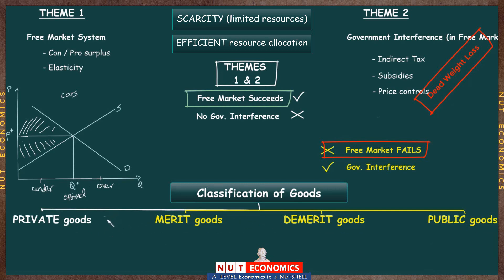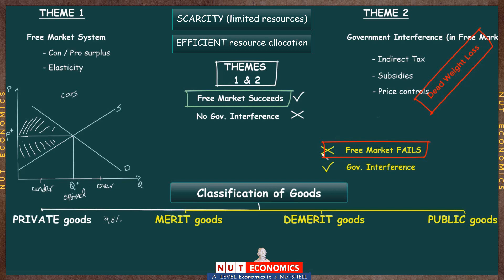Most of the goods you can think of — around 90% — are private goods. So our core message still is to leave it to the free market. But what we are adding now is that sometimes markets fail, so we need to understand what are these three different types of goods that cause market failure.